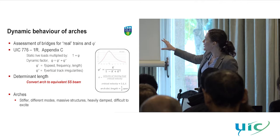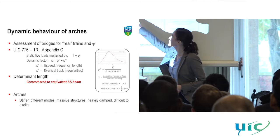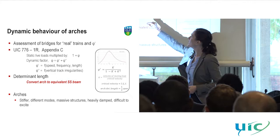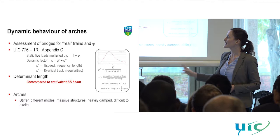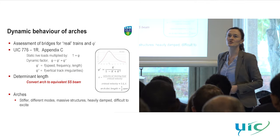This summarises some of the guidance as it exists. These are basically your dynamic factors, broken down into a dynamic factor assuming perfectly smooth track conditions, and then a dynamic factor that accounts for vertical track irregularities. You essentially add the two of them together to get your overall dynamic factor, add it to one, and multiply your static live loads by that value.